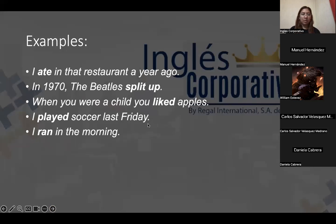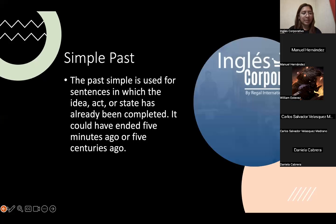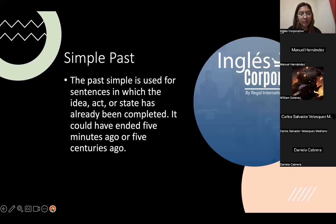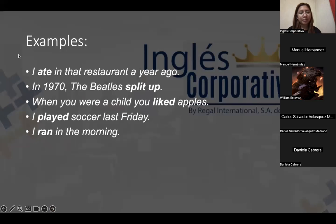Welcome for the rest that are joining right now. Welcome to the class. Now that it is clear about what simple past is about — it's practically a simple past — it can be an idea, an act, or something that already happened or has been completed. Something that happened and that's it. It could have been five minutes ago or centuries ago.